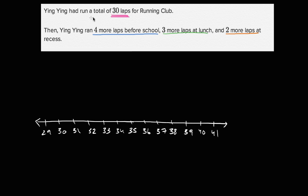So let's see. Ying Ying started at 30 laps for a running club. Then Ying Ying ran four more laps before school. So on the number line, if I go four more, that's going to be to the right. I'm going to be increasing by four. So I'm going to be increasing by one, two, three, four.